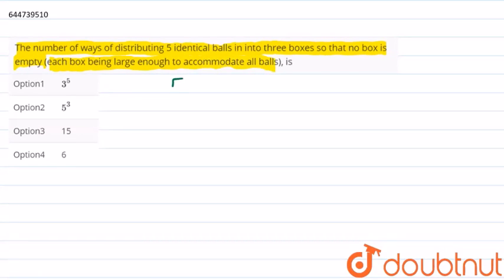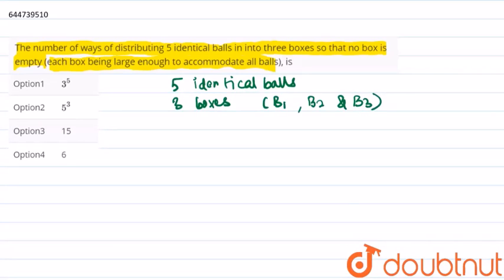We have five identical balls and three boxes which can be named as B1, B2, and B3.